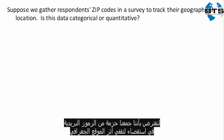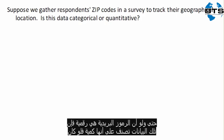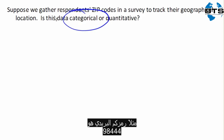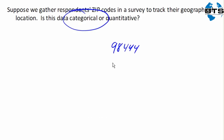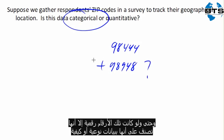Suppose we gathered a bunch of zip codes in a survey to track geographic location. Is that data categorical or quantitative? Even though zip codes are numerical, this data is categorical. Because if your zip code is 98444 and my zip code is 98498, it would make no sense at all to add those — it wouldn't mean anything to add those. So even though these are numerical, they are just categorical data.